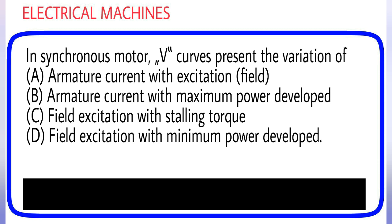In synchronous motor, B curves present the variation of: (A) Armature current with excitation field, (B) Armature current with maximum power developed, (C) Field excitation with stalling torque, (D) Field excitation with minimum power developed. Answer is option A.